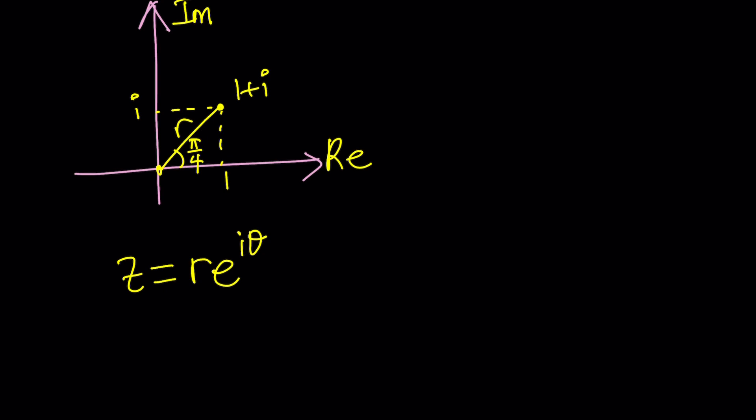So, 1 plus i can be written as... What's the hypotenuse? 1, 1, root 2, right? Multiply by e to the power i times π over 4. Because θ is π over 4. You see that? I mean, don't you see? θ is π over 4. It's an isosceles right triangle.